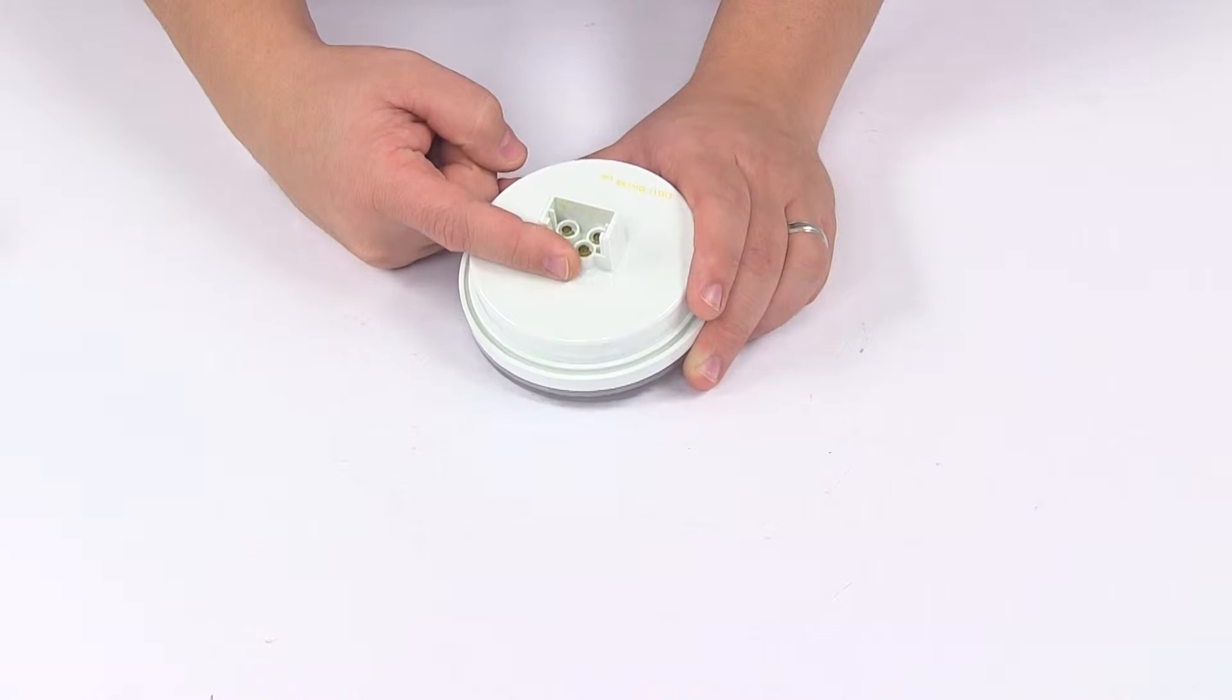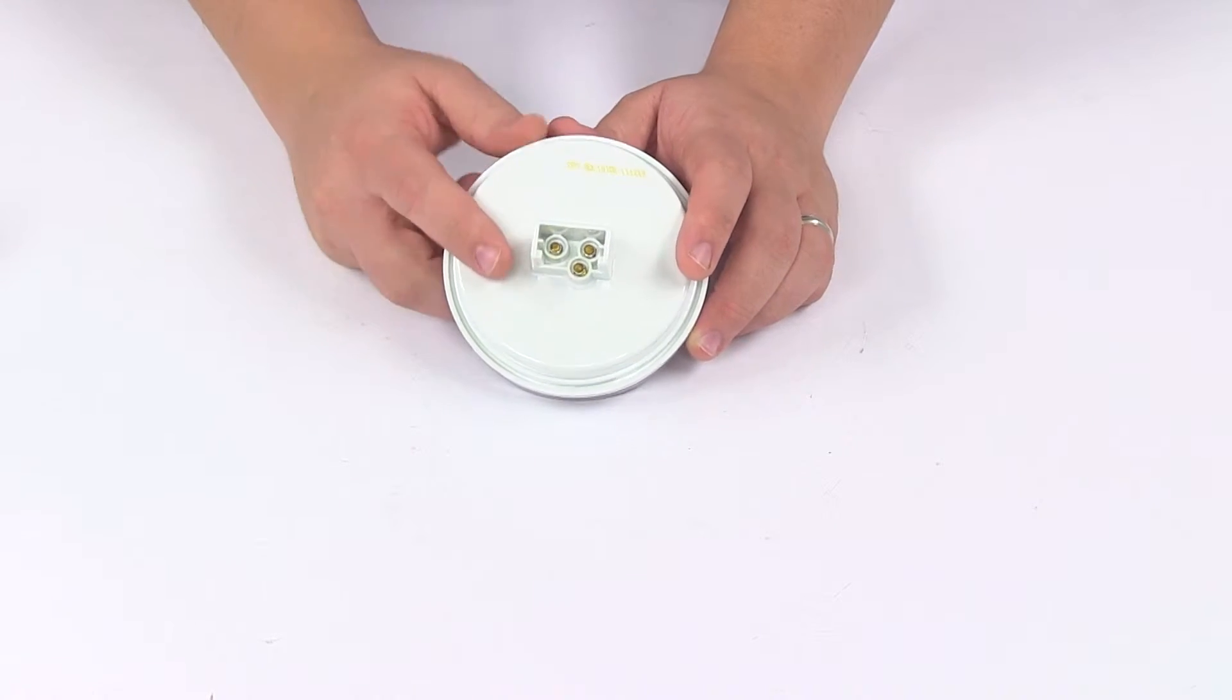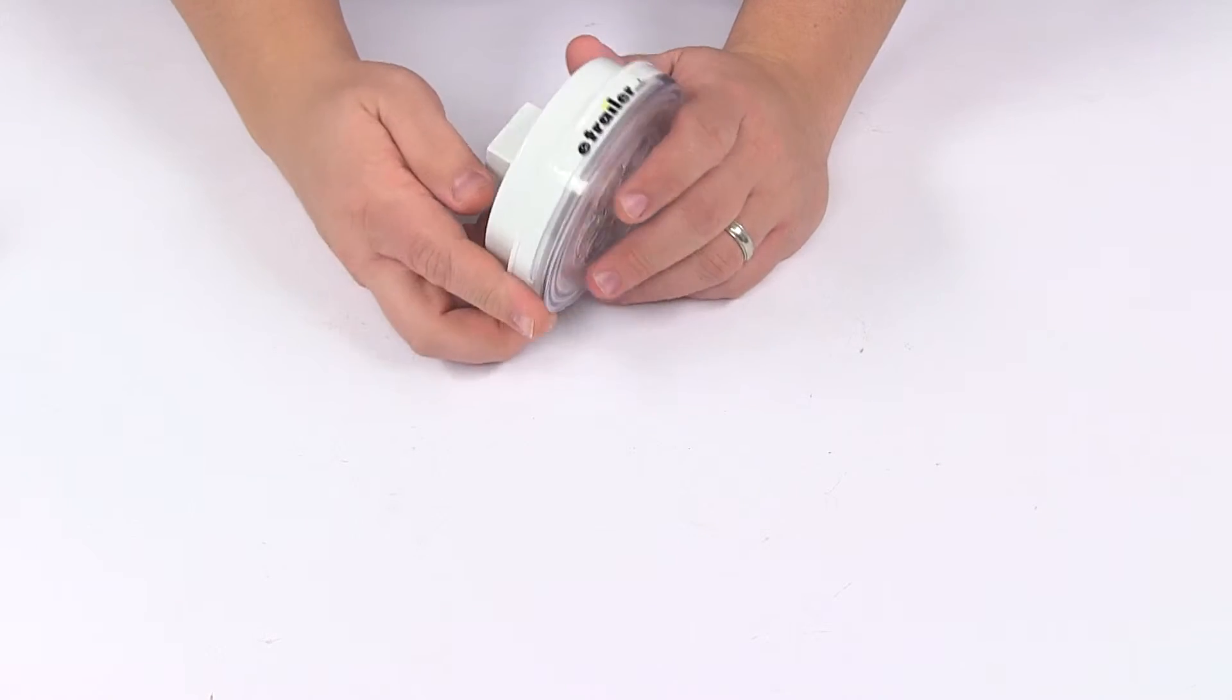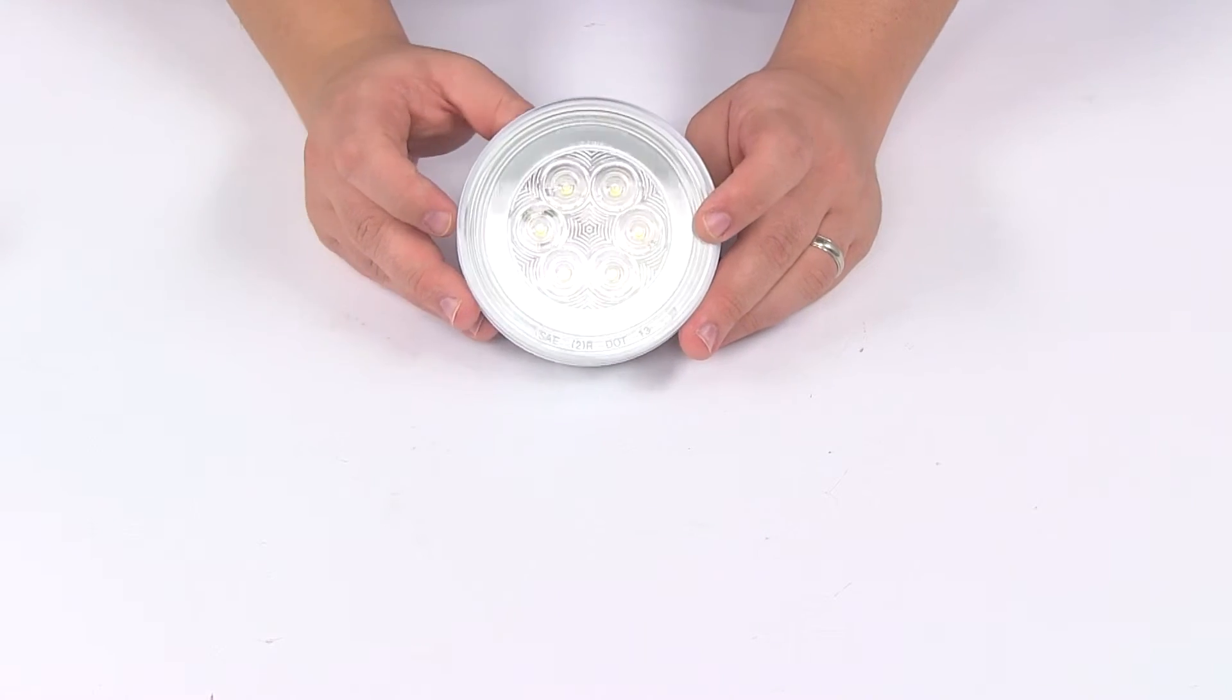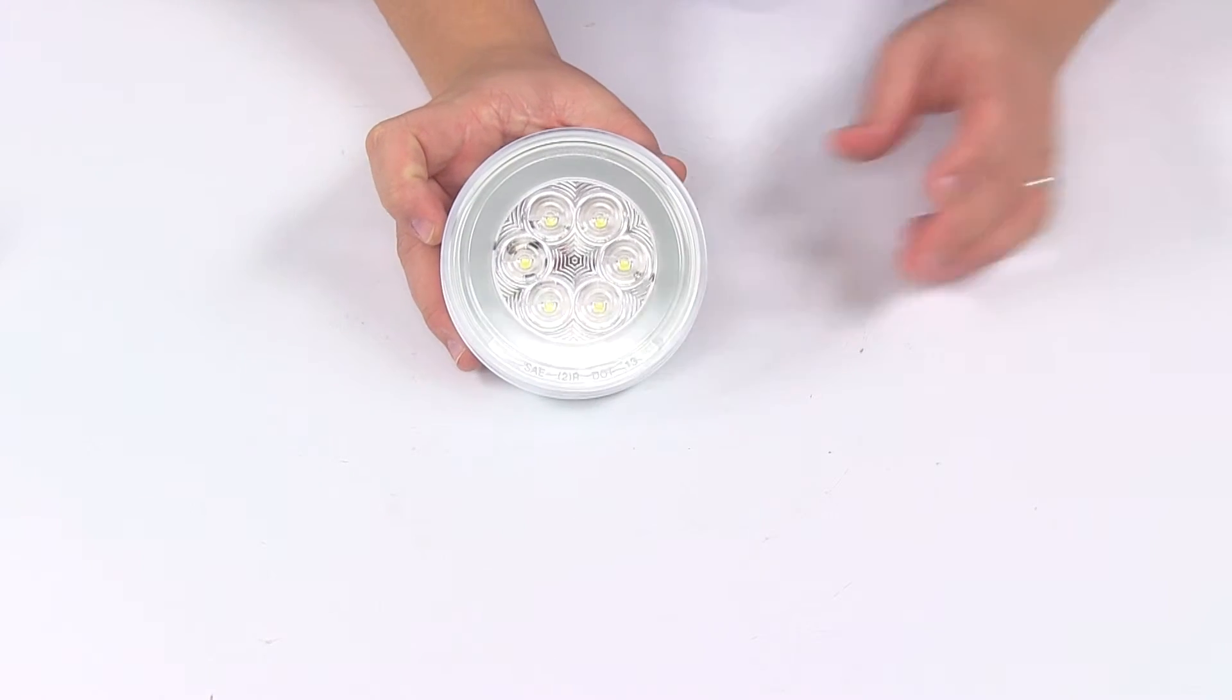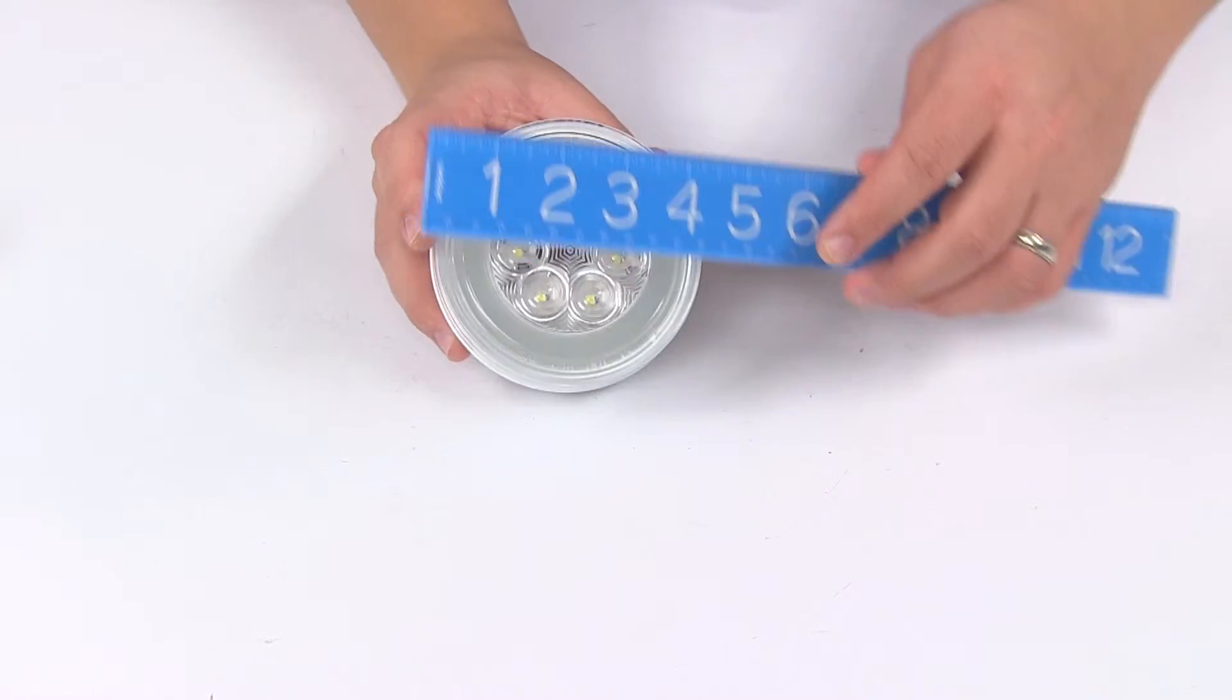As you'll see later, the two-prong plug will cover up all three connection points for a sealed connection. The unit is Department of Transportation compliant and meets FMVSS 108 requirements. Taking a look at dimensions, starting with the diameter, that gives us a measurement of four and one-quarter inches.